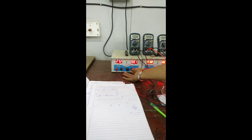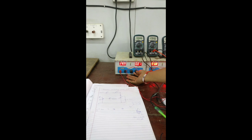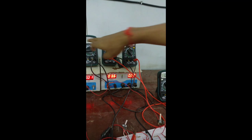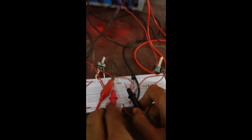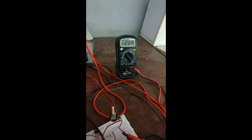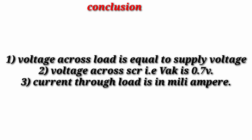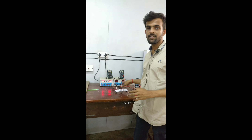The load voltage at 25 volts is exactly equal to the supply voltage. When the SCR is triggered, whatever supply we give, we get it on the load resistance. At 30 volts, the load voltage is 29.4 volts. The conclusion from this practical is: the voltage across the load equals the supply voltage, the voltage across the SCR (VAK — voltage across anode and cathode) is 0.7 volts, and the current through the load is in milliamperes, whereas in blocking mode it was in microamperes.